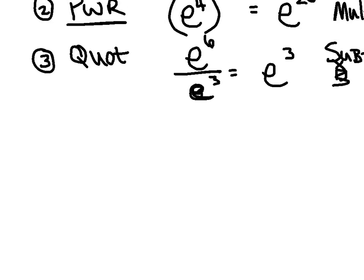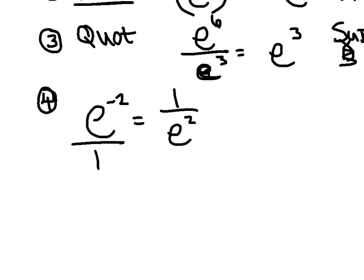All the rules with negative exponents apply just the same. If I had e to the negative 2 power, that would simply be 1 divided by e squared. Moving that base from the numerator down to the denominator allowed me to change the signs of my exponent.